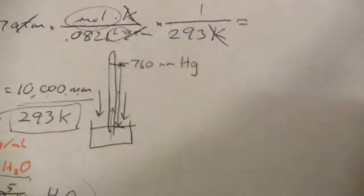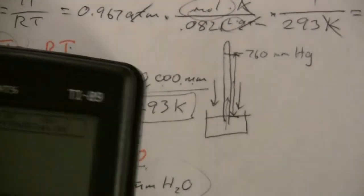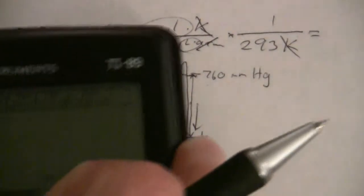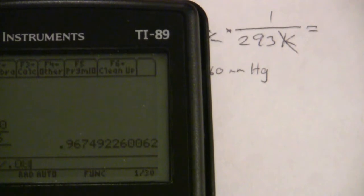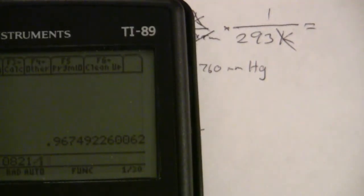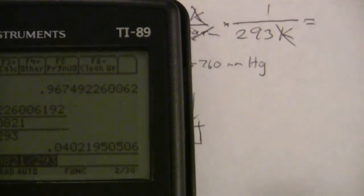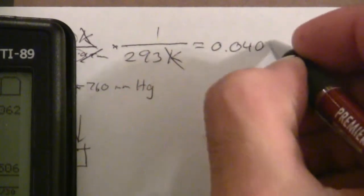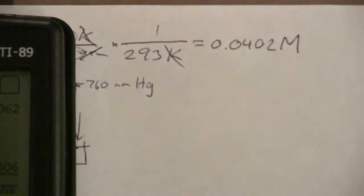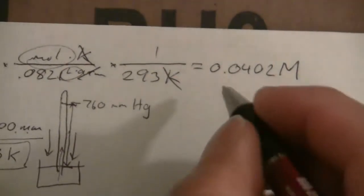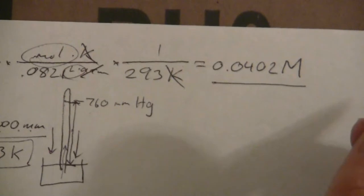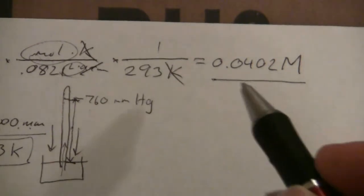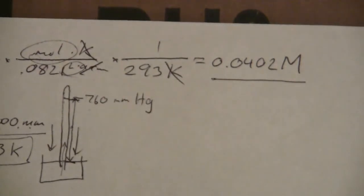So the concentration here is going to be 0.967 divided by 0.0821 divided by 293 and we have 0.0402 molar. So that is the answer to the first question which says what is the molarity of the total molarity of all the solutes in the sap.